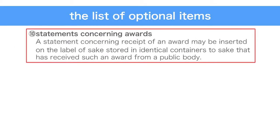Finally, there are statements concerning awards. A statement concerning receipt of an award may be inserted on the label of sake stored in identical containers to sake that has received such an award from a public body. There are also items that may not be shown on the container or packaging of sake. These include wording such as saiko (best), daichi (number one), or daihyo (leading), implying the product is the best in the industry. It is also prohibited to state purveyor to the imperial household agency or similar wording. Award descriptions indicating receipt of an award from a public organization may be included on the label of the sake that is stored in an identical container to the sake that received the award.